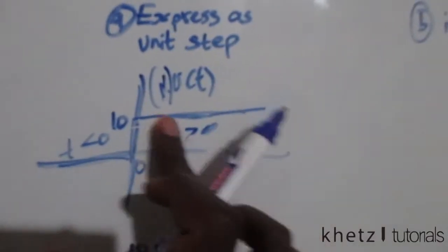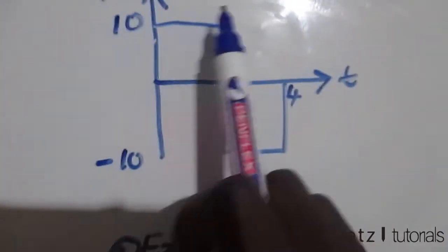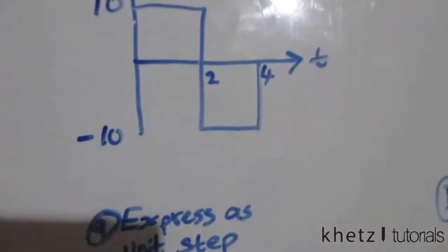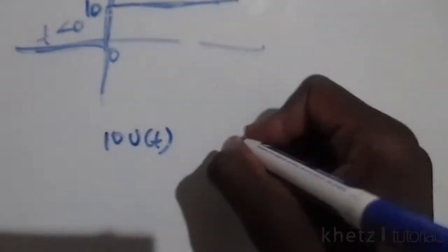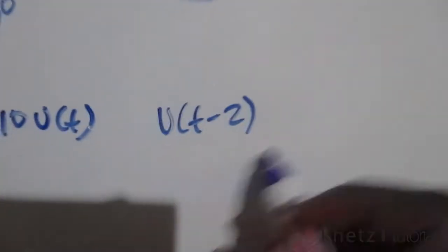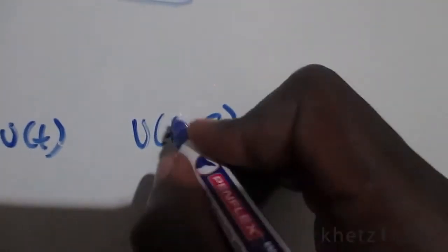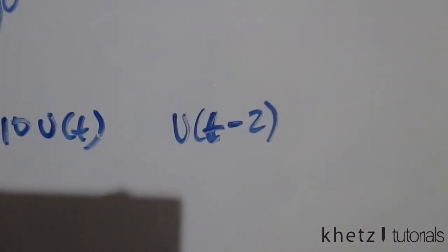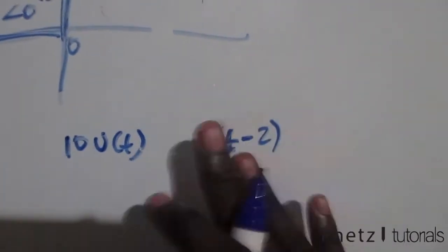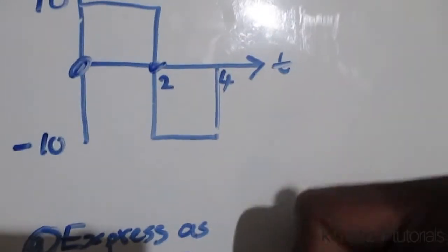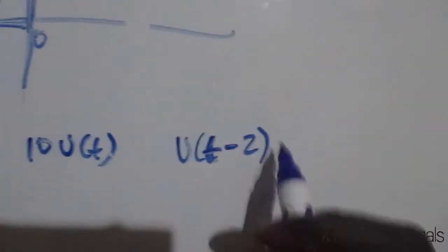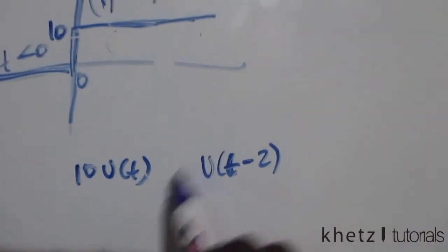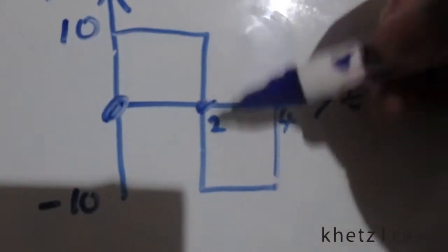That would go on infinitely, but at time t=2 we have a disturbance. This is how you represent a delay in time. t=0 is associated with the first part of the expression, and t=2 is associated with this shifted notation. So what actually happens at t=2?